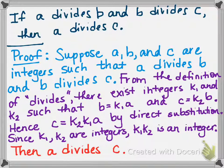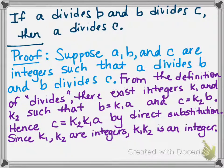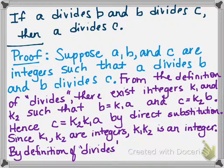So, what did we want? We wanted to be able to write C as an integer times A. And that's what we have. And so that tells us by the definition of divides, then A divides C. So I also want to include that by the definition of divides, A divides C. So what I want you to see here is that our proof is done now.